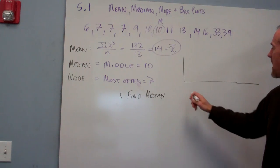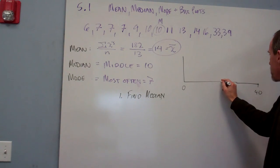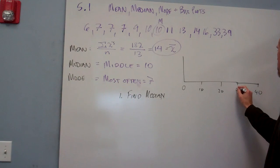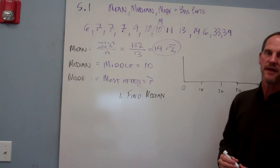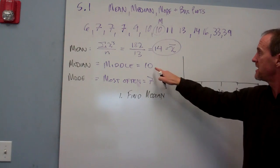I'm going to go from 0 to 40, and then carefully there's my 20, there's my 10, there's my 30. Then I'm going to make a small light line at the median value, the middle value, right here at 10.